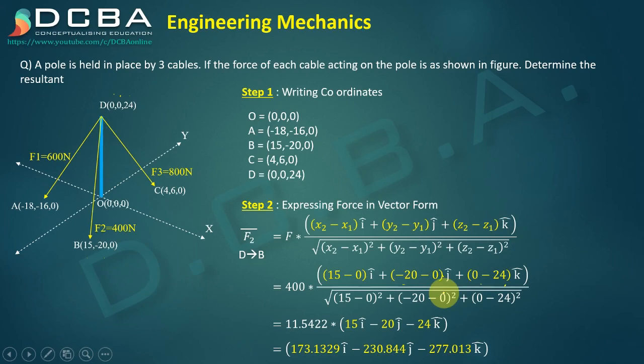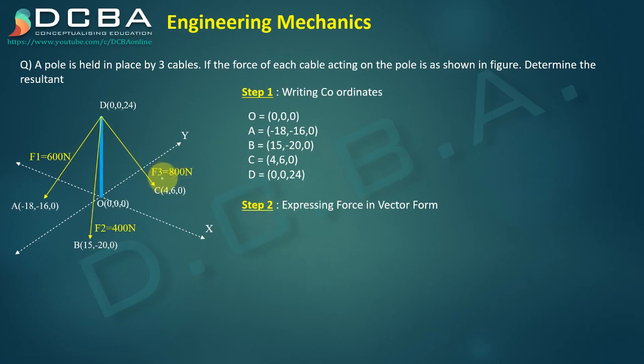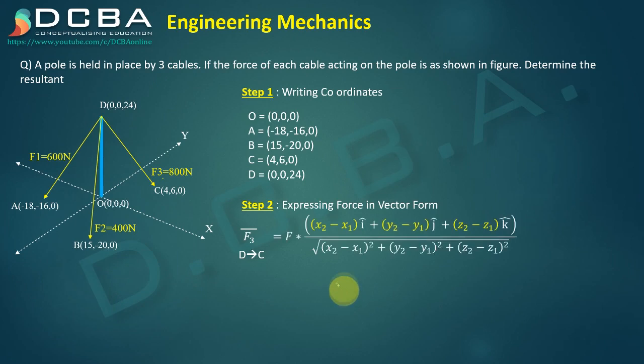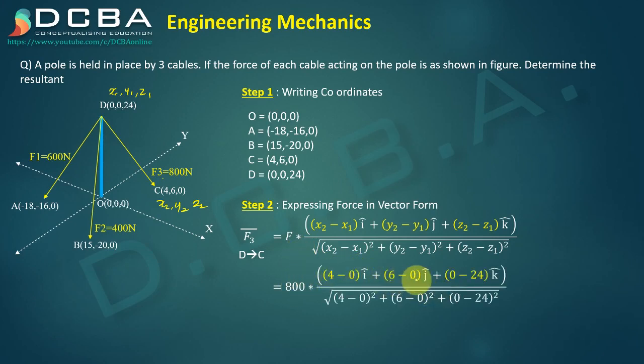Then F3 bar, it is going from point D to C. So F is your 800 newtons, this is your again x1, y1, z1, x2, y2, z2. So it is 800 multiplied by (x2 - x1) plus (y2 - y1) plus (z2 - z1) upon under root of (x2 - x1)² plus (y2 - y1)² plus (z2 - z1)². When you solve it you will be getting 127.694 i cap + 191.541 j cap - 766.163 k cap.